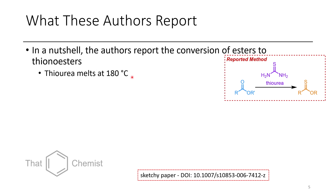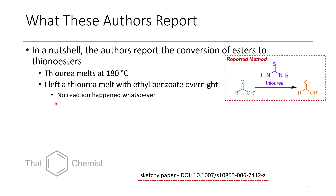Thiourea melts at 180 degrees. They do this neat with an excess of thiourea and say they do it in an autoclave. I tried this reaction, but instead of using an autoclave I put it in a sealed vial, heated it until the thiourea melted, and left it as a melt mixing overnight — over 16 hours. No reaction happened whatsoever. I did a GCMS and couldn't detect any other products forming, which is typical — thionoesters are easily tracked using GCMS.